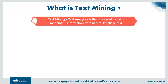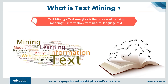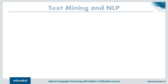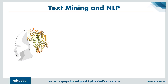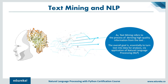Text mining is the process of deriving meaningful information from natural language text. It usually involves structuring the input text, deriving patterns within the structured data, and finally evaluating the interpreted output. Compared with data stored in databases, text is unstructured, amorphous, and difficult to deal with algorithmically. Nevertheless, text is the most common vehicle for the formal exchange of information. The overall goal of text mining is to turn text into data for analysis, done through the application of NLP.